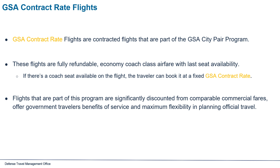The first type of fare we will discuss are GSA contract rate flights. GSA contract rate flights are contracted flights that are part of the GSA city pair program. These flights are fully refundable economy coach class airfare with last seat availability. If there is a coach seat available on the flight, the traveler can book it at a fixed GSA contract rate. Flights in this program are significantly discounted from comparable commercial fares and offer government traveler benefits of service and maximum flexibility in planning official travel.